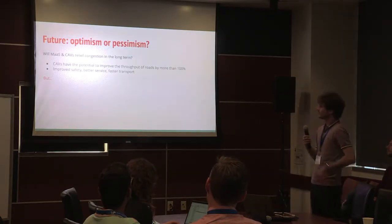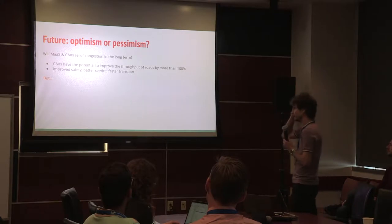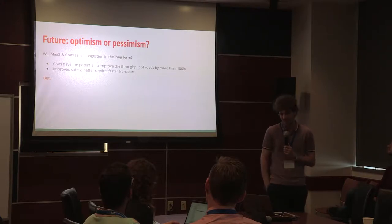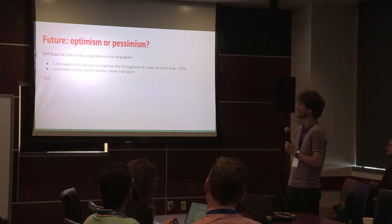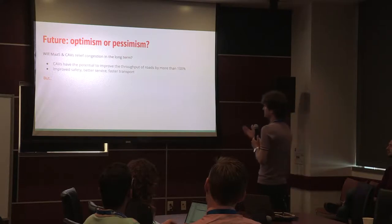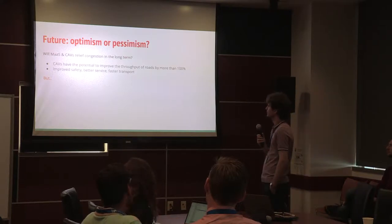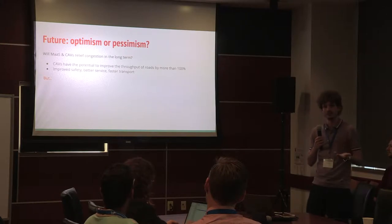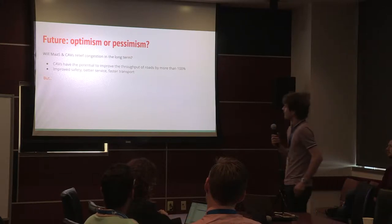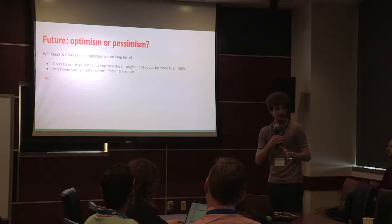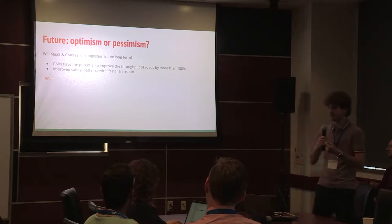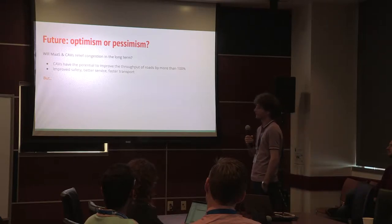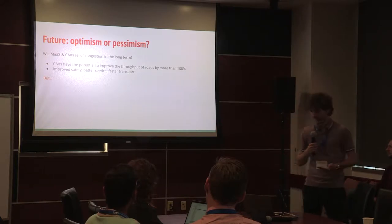On the bright side, regarding mobility as a service and autonomous cars, there are points indicating they may relieve congestion long-term. First, autonomous vehicles have the potential to improve road throughput by more than 100% — basically doubling road capacity — because they can drive closer together, better exploit space, and have better timing when moving through junctions. There's also improved safety, better service, faster transport, fewer accidents and less congestion.